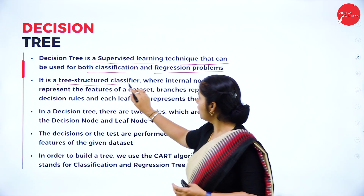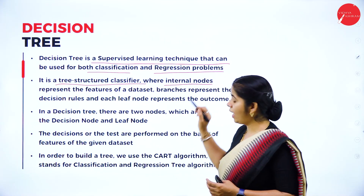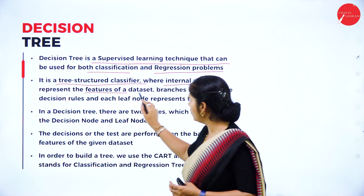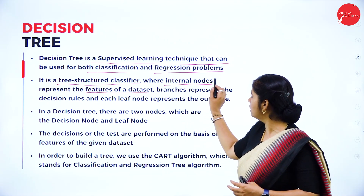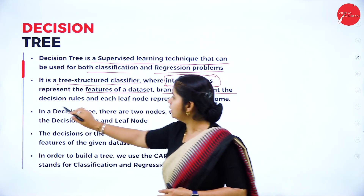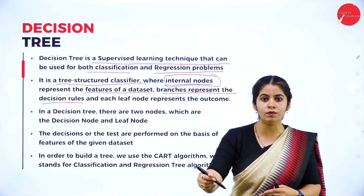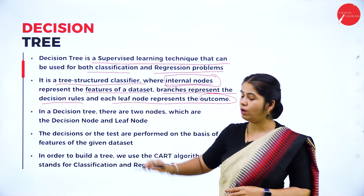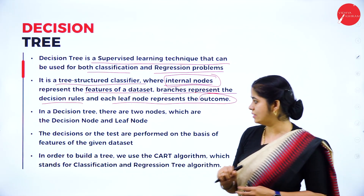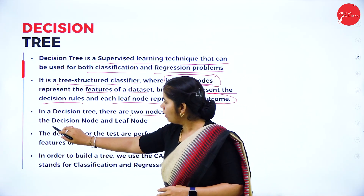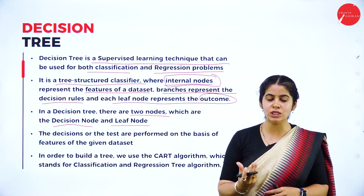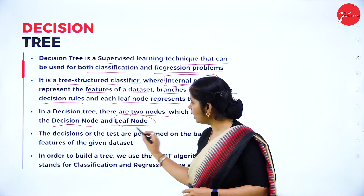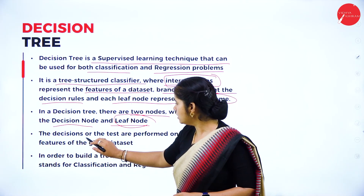A decision tree is a tree-structure classifier. It has nodes: internal nodes represent the features of the data set, branches represent the decision rules, and each leaf node represents the outcome. In a decision tree there are two types of nodes: the decision node and the leaf node. The decision node depends on the attributes or features — it will take a decision. The leaf node is the output of that particular decision.